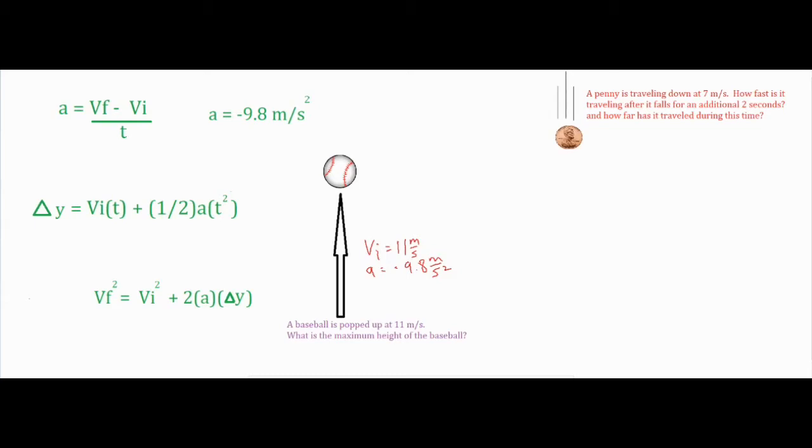Now if you don't have your third number, then you want to try to see if you can identify if there is a zero in the problem. You can use a zero if one, the object is dropped from rest, or two, if it comes to rest at the peak of its flight.